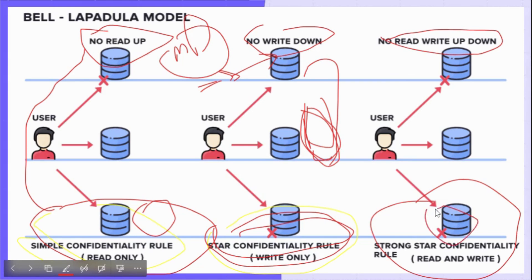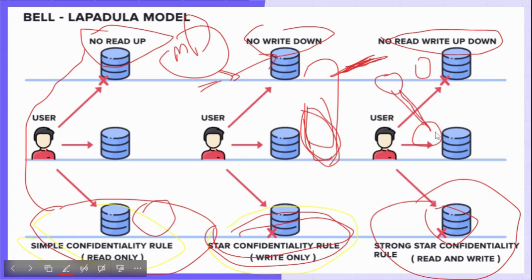In the Strong Star Property Rule, if somebody is working as a Financial Head and another person is working as an HR Head, they both can read and write to each other because they are working on a similar level. However, within the HR department, the HR Head and the HR Executive cannot read or write confidential documents to each other. So in this rule, only persons working on the same level can read and write to each other. Thank you for watching.